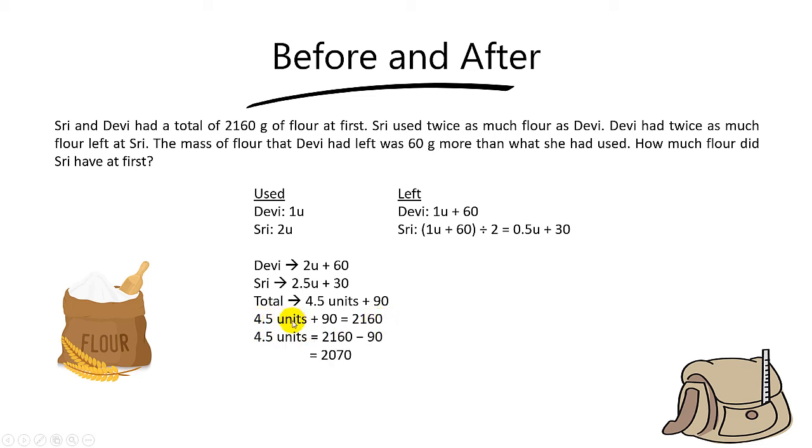So to find 4.5 units, you take 2,160 minus 90, you get 2,070. And so to find 1 unit, you simply punch in your calculator. You take 2,070 divided by 4.5, you should get 460.